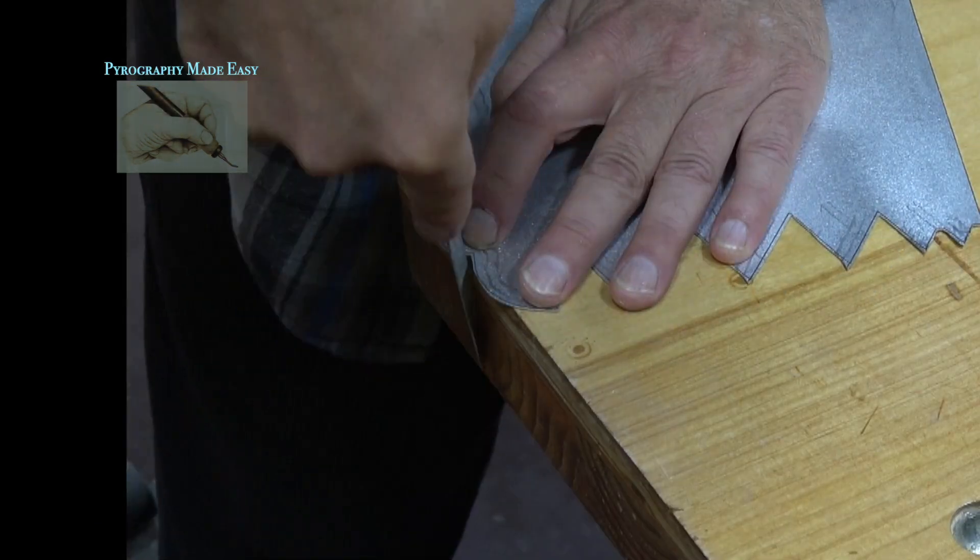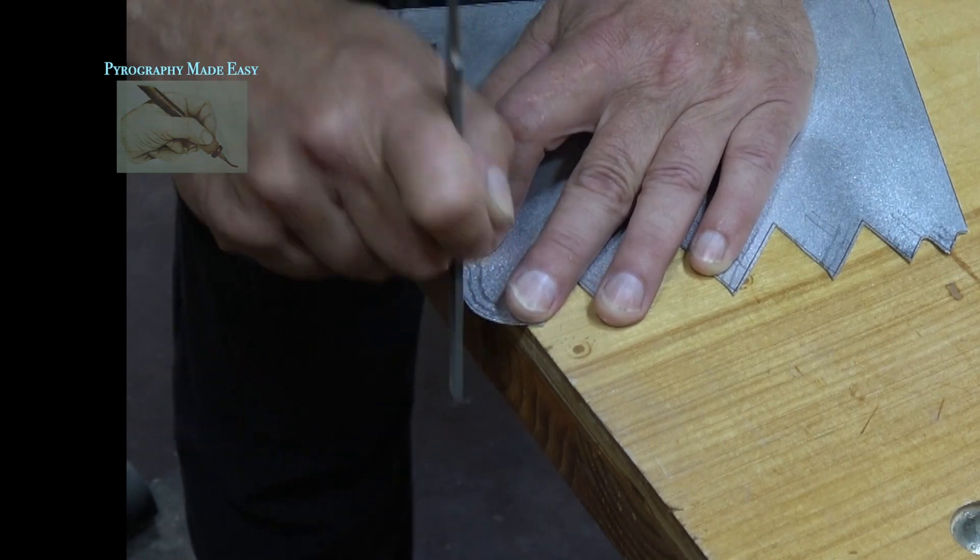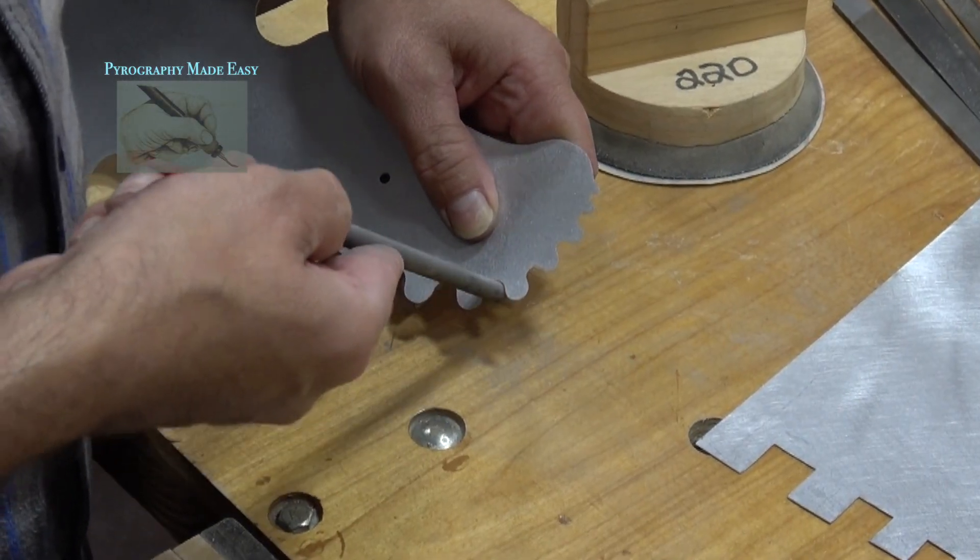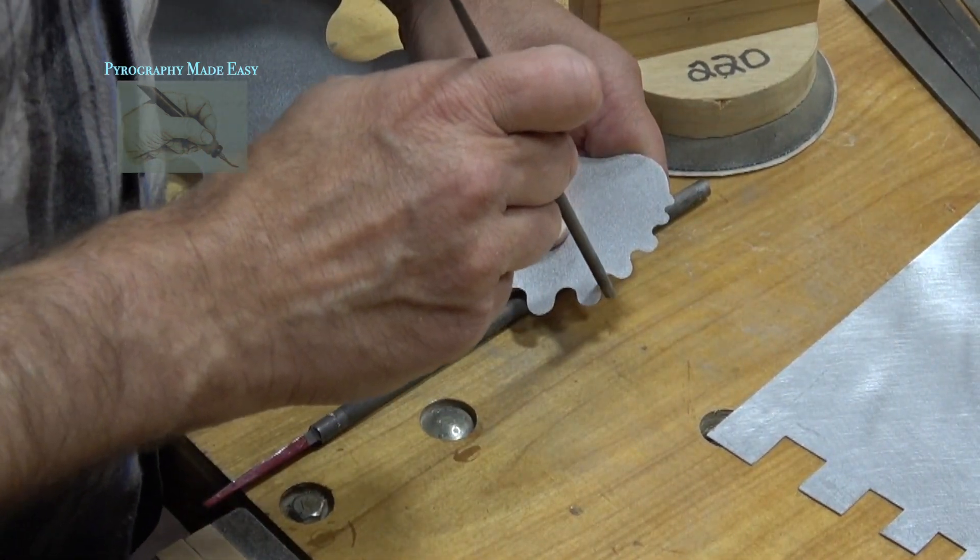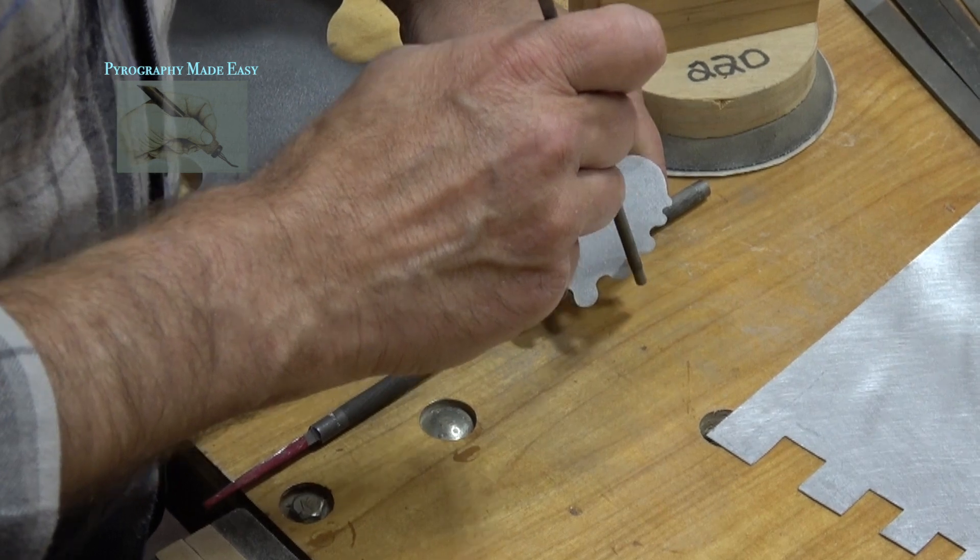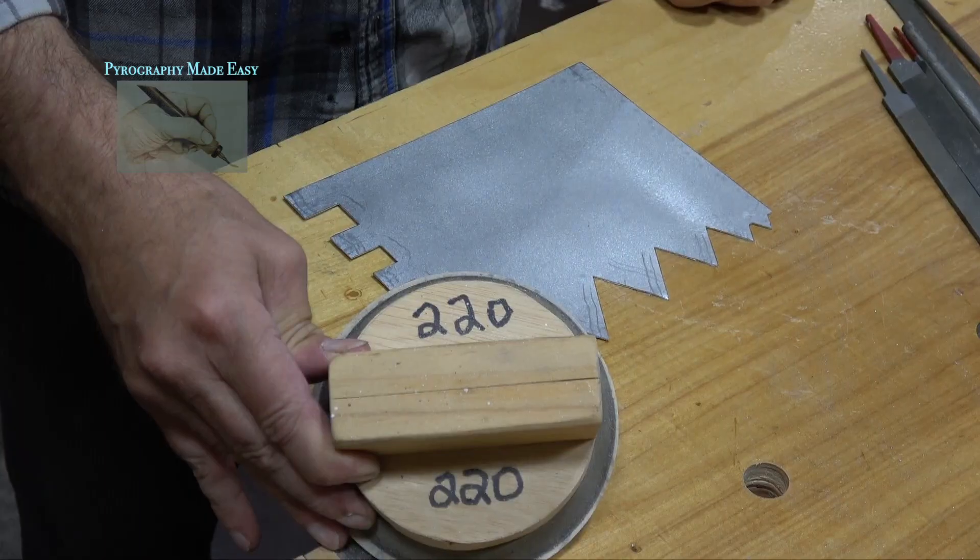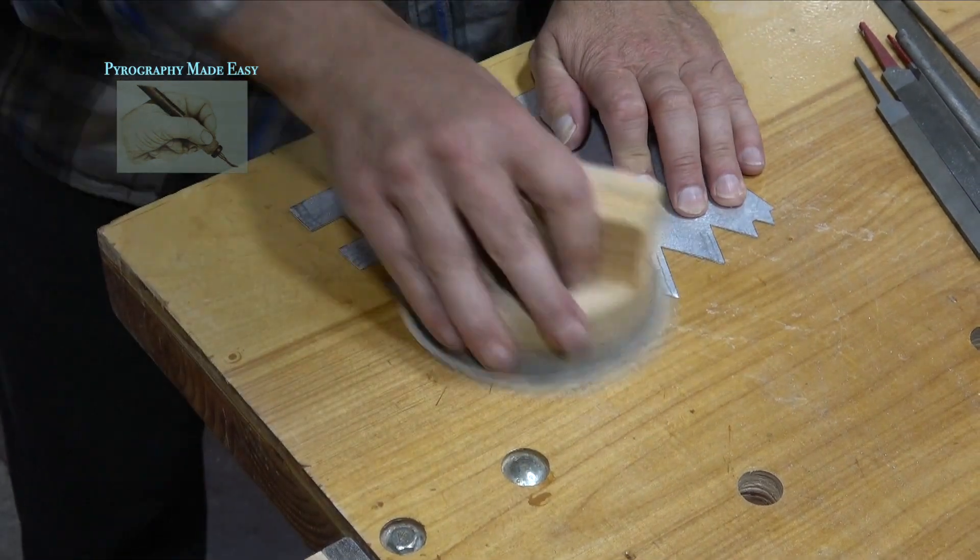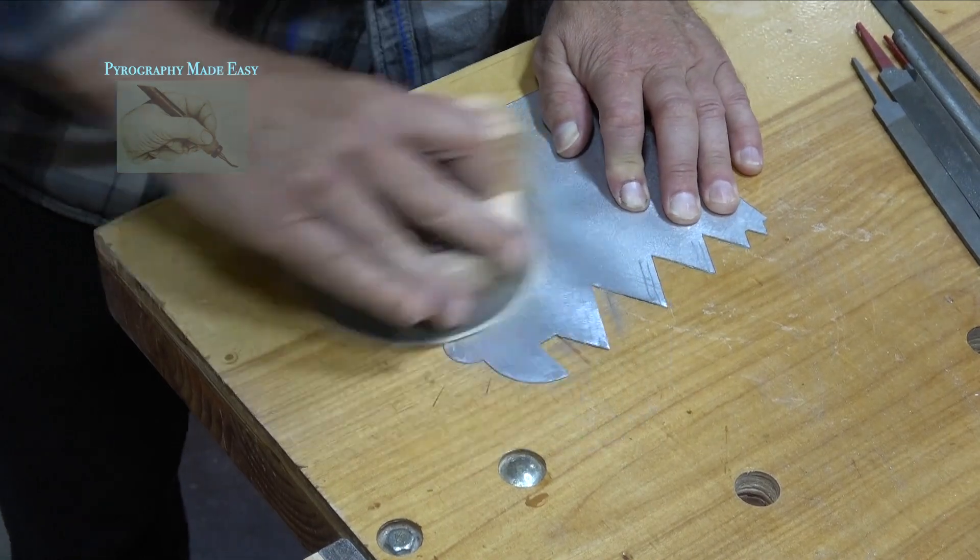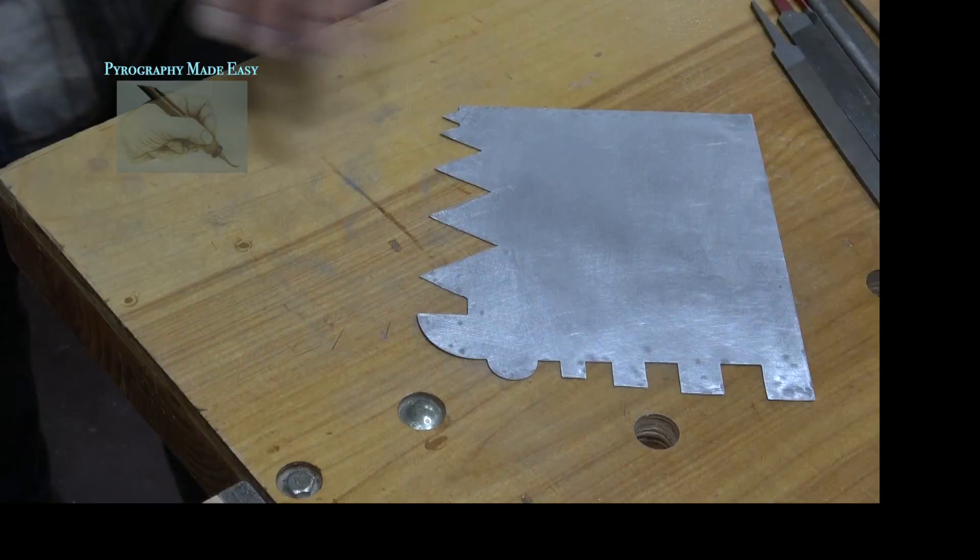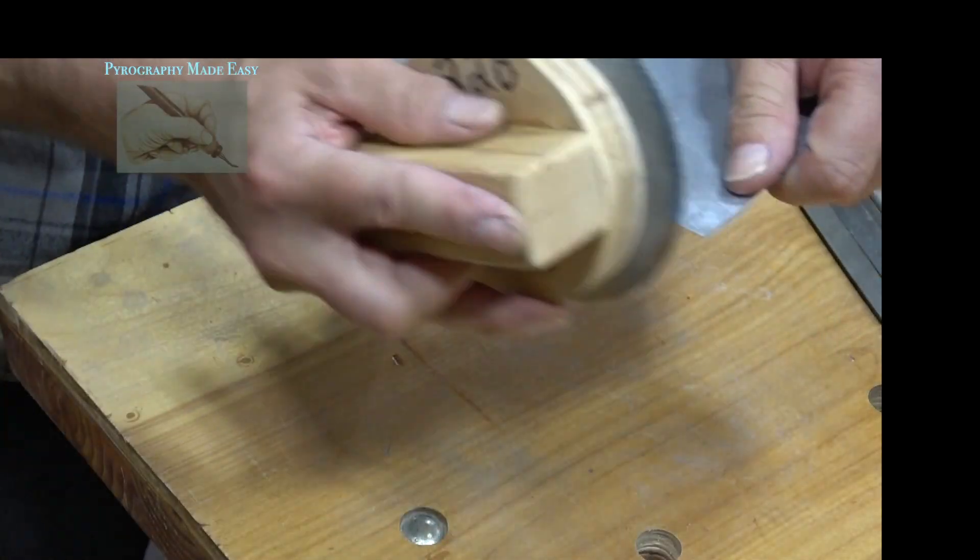When working on outside curves you can still use a flat file. For the inside curves it is much easier to use round files. When possible Todd matches the size of the file with the size of the curve. The last thing Todd does is sand over the front and back surfaces of the shield using 220 grit sandpaper. This removes any scuff marks and any small burrs that may be present.